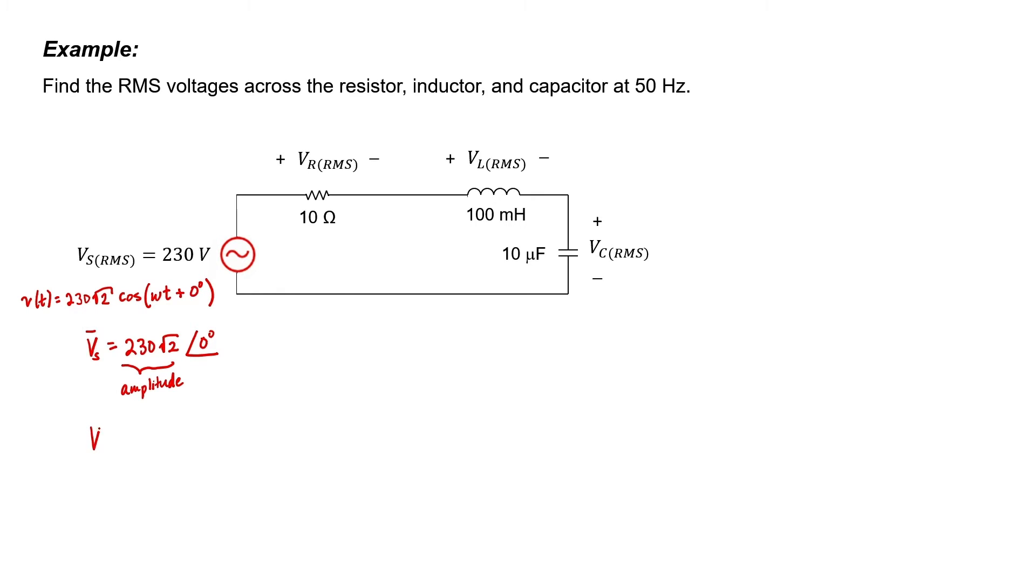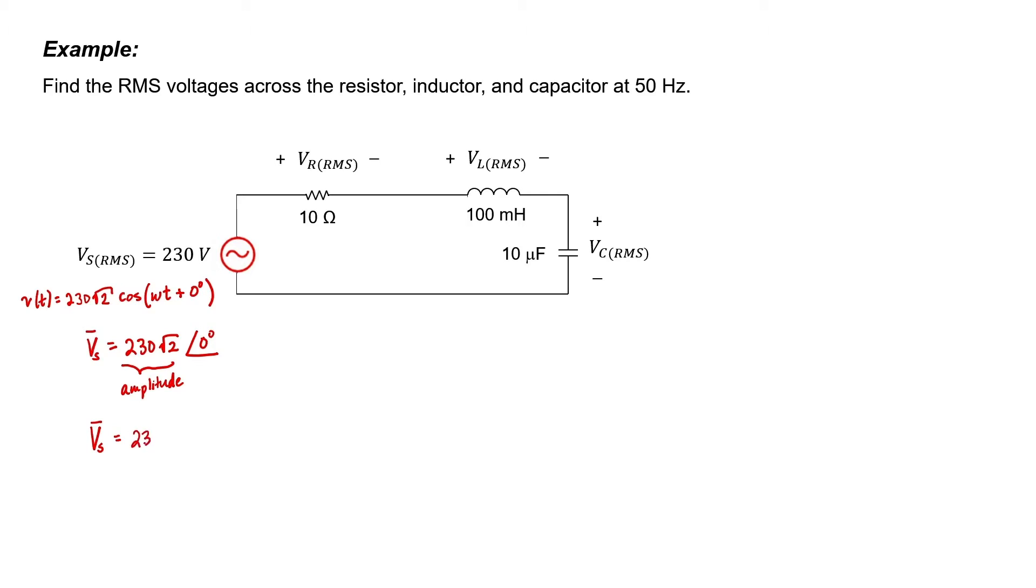Since this problem tasks us with finding RMS voltages, there's no need to convert the RMS voltages to amplitudes and then back to RMS voltages again later. So let's instead keep everything in RMS. We just need to remember that we're using RMS voltages.